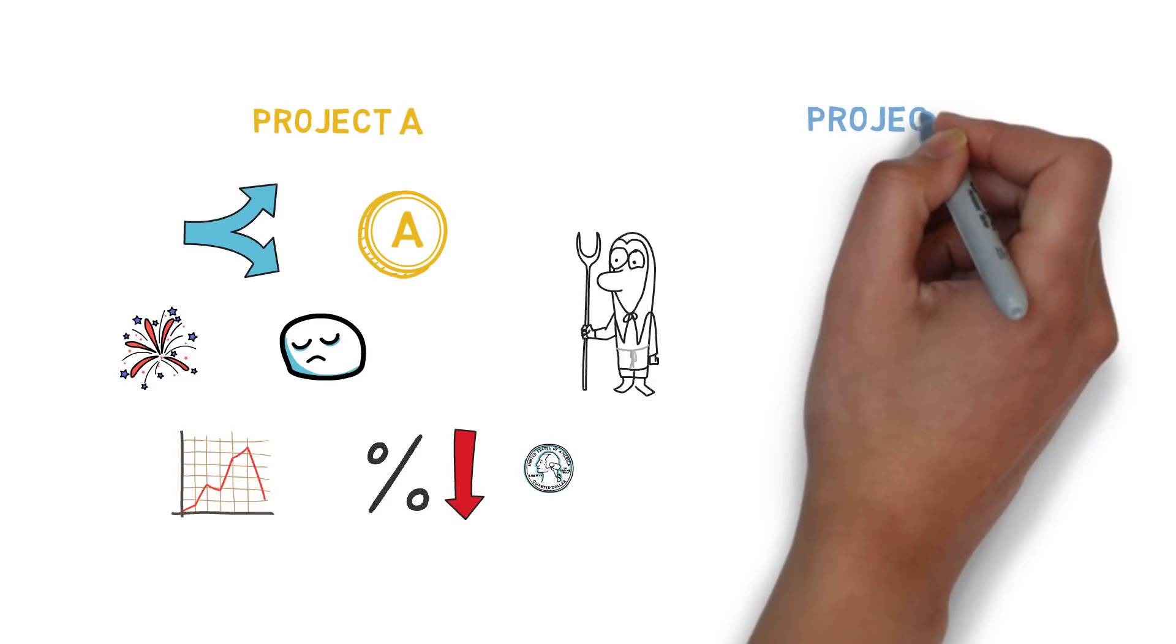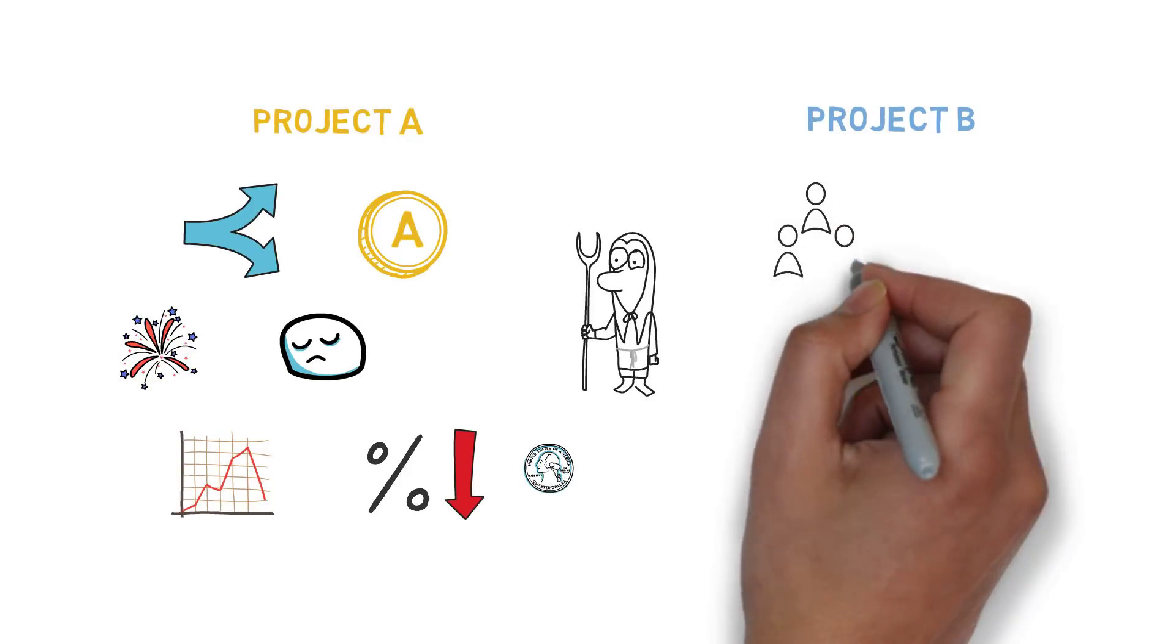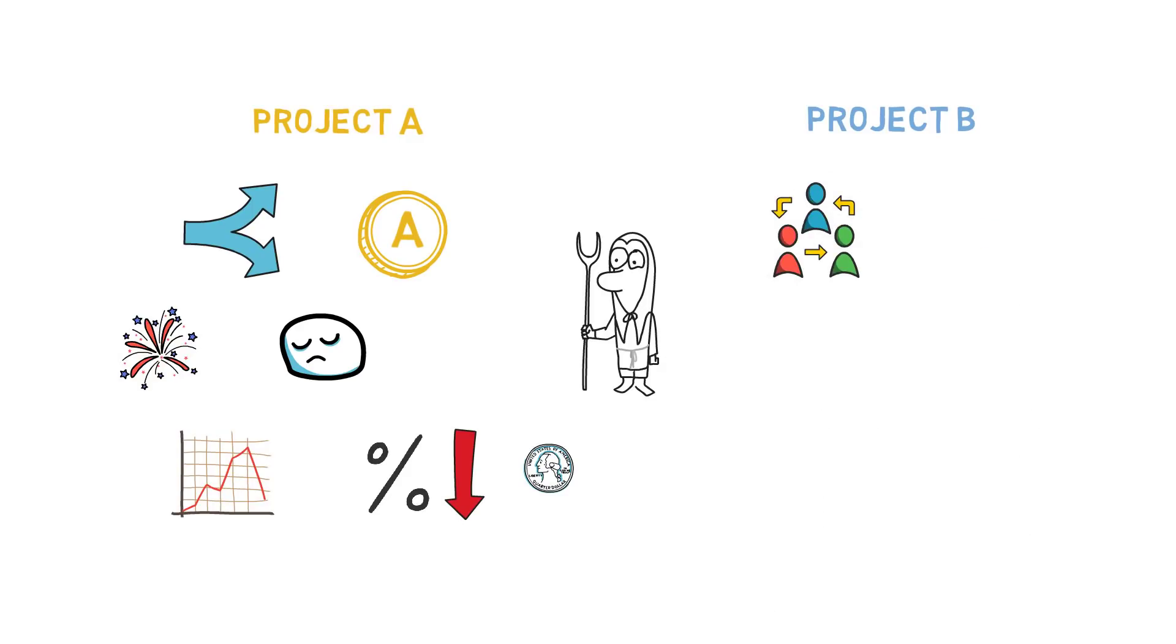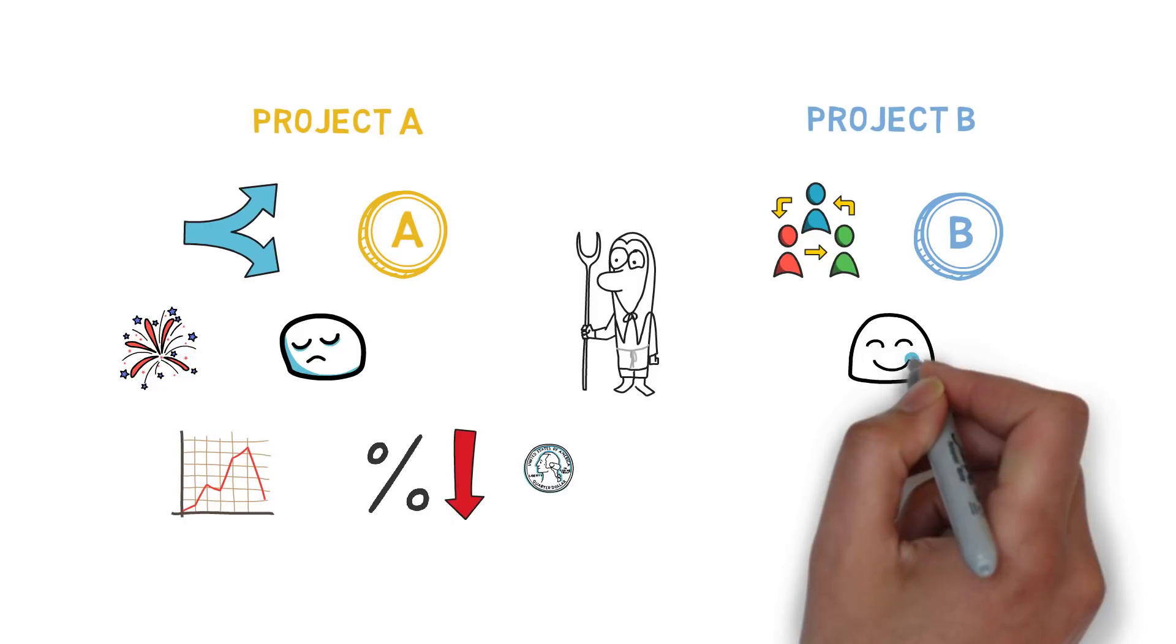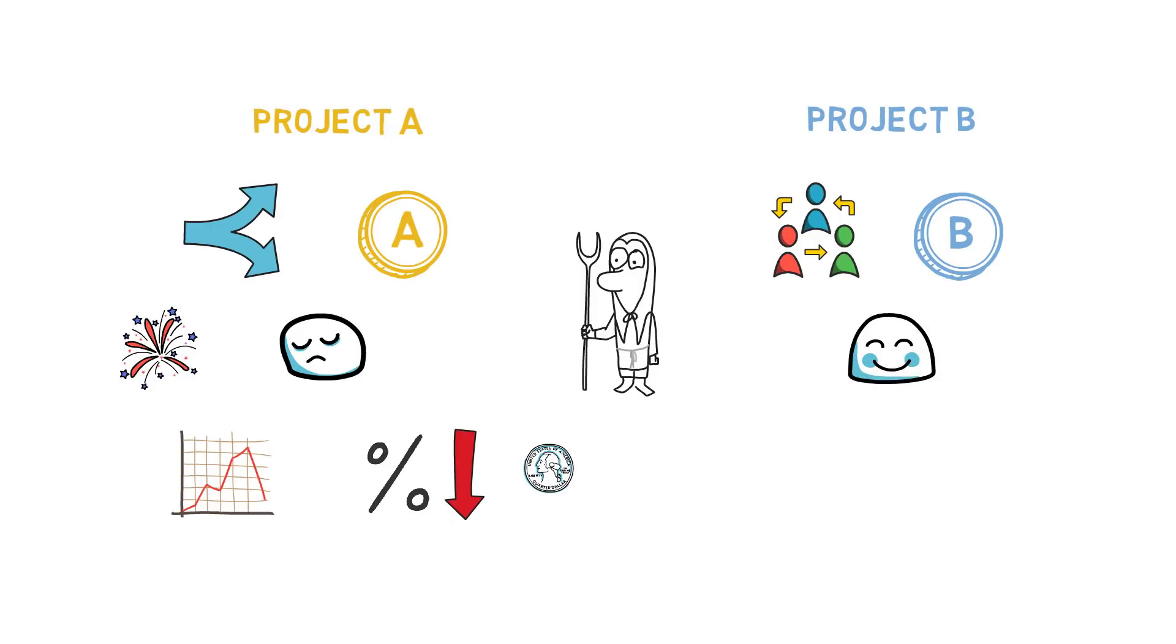Project B, on the other hand, is a well-known project that just started its liquidity mining program by distributing Token B. Token B is in demand as investors believe in a long-term value proposition of Project B, and they think that Token B will appreciate in value over time.